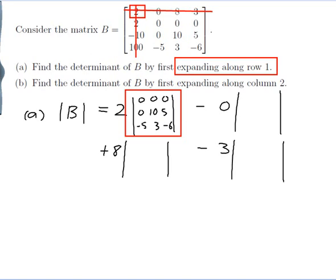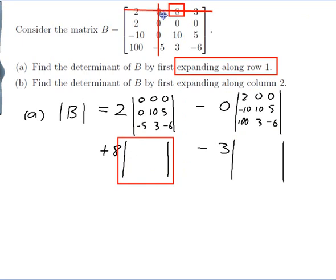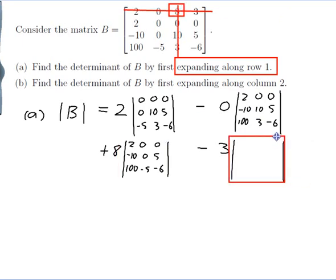And I do that for all of them. For the next one, I move to the 0 and cross out the row and column I'm in, leaving that matrix. Then for the 8, I move to that position, cross out the row and column, and copy what's left. Finally for the 3, I cross out its row and column and write what's left.